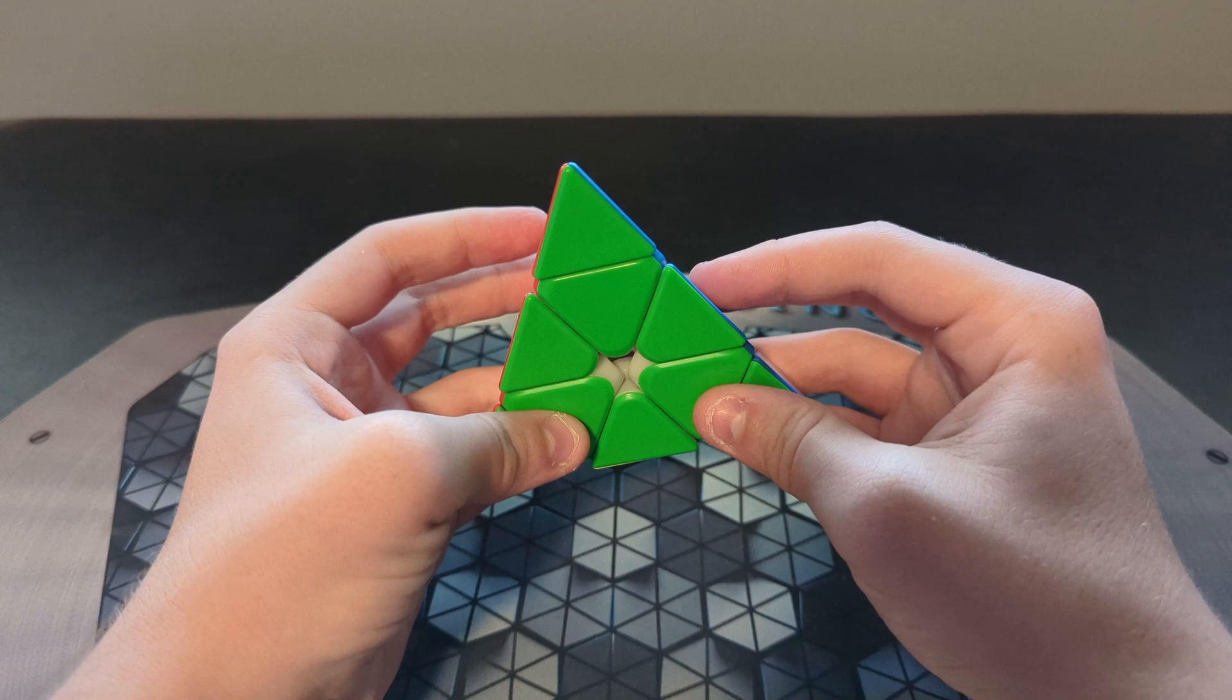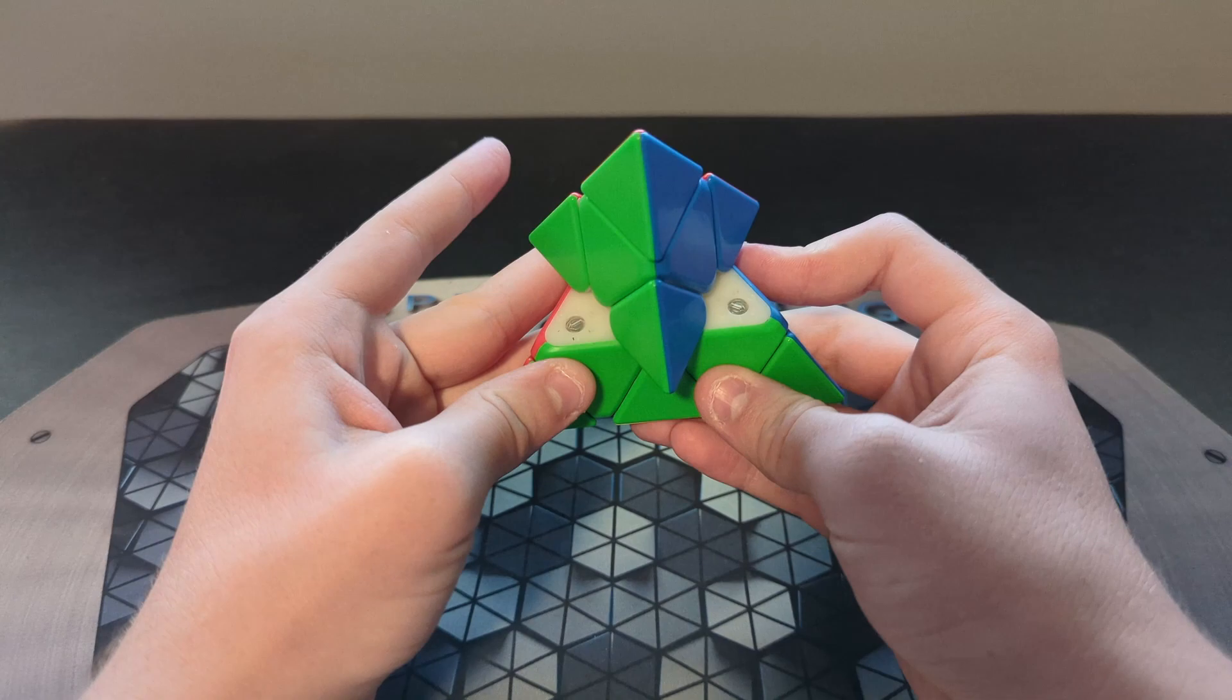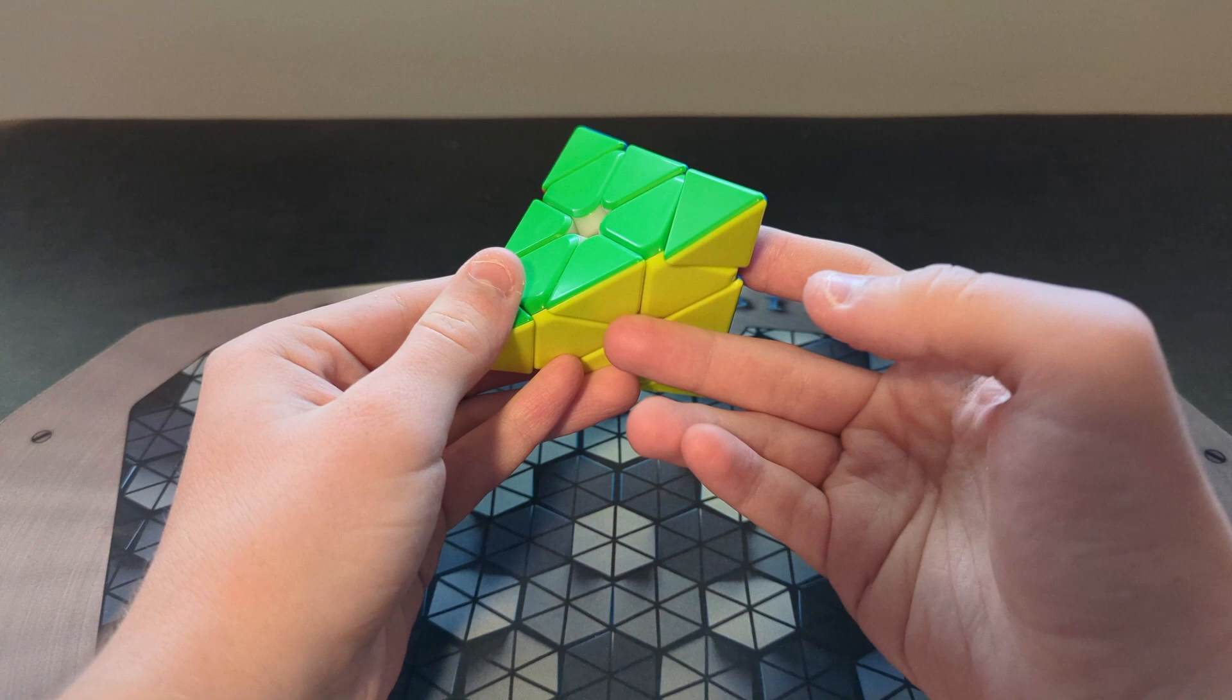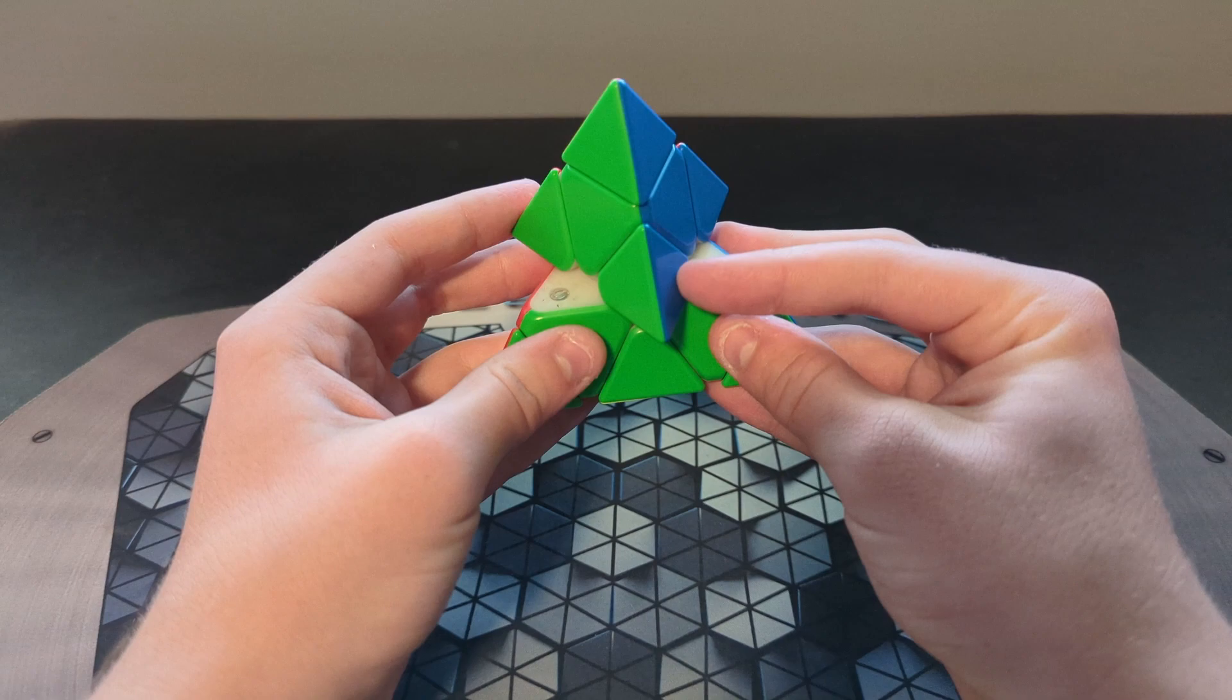The forward corner cutting is also pretty good on this puzzle. YJ advertises that it has 120 degree corner cutting, but that is a bit misleading. You can see that it'll go from almost any angle like this, but if you test Pyraminx corner cutting, you should make sure you're holding it in the same grip that you would do solves.